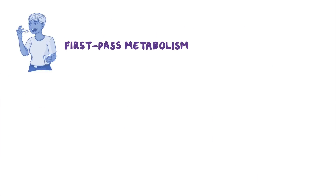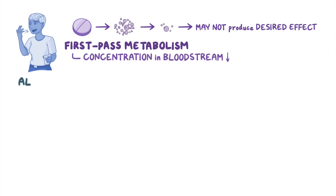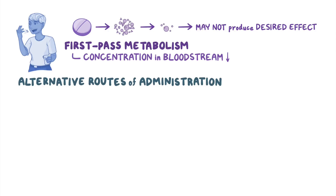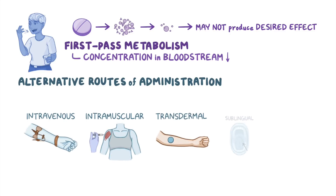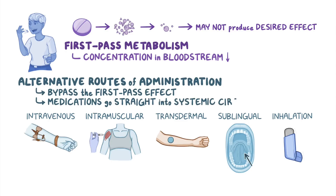However, if a medication is taken orally and it undergoes extensive first-pass metabolism, its concentration in the bloodstream can get so reduced that once it reaches its site of action, it can't produce the desired effect. In that case, alternative routes of administration should be considered, including intravenous, intramuscular, transdermal, sublingual, or inhalational administration. What these do is bypass the first-pass effect, allowing medications to go straight into the systemic circulation and produce their effect.